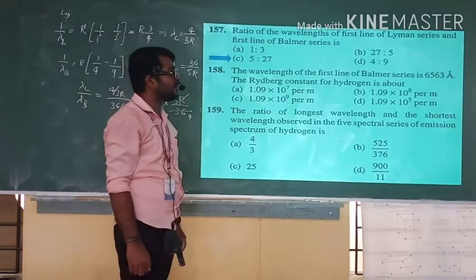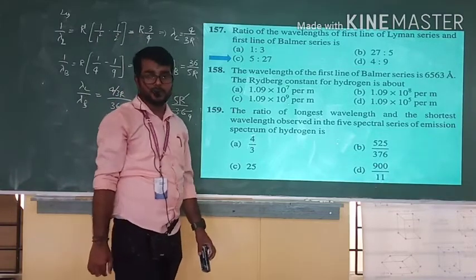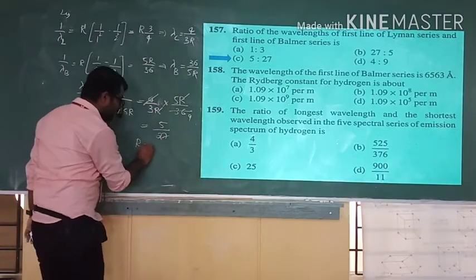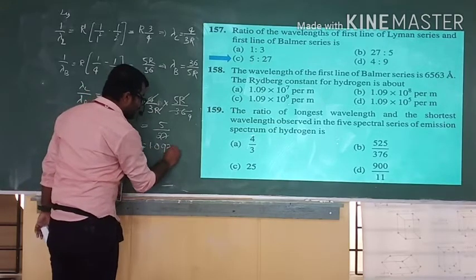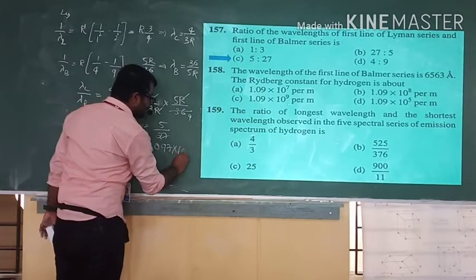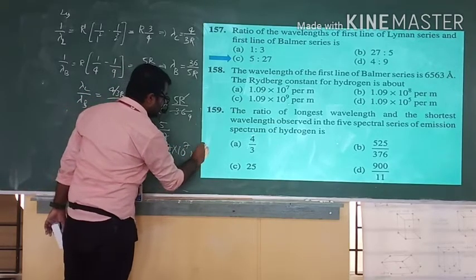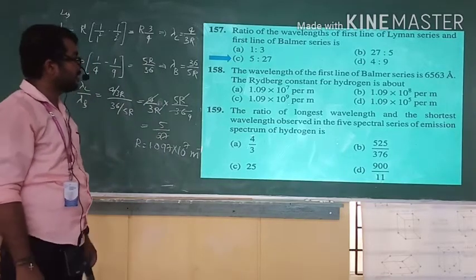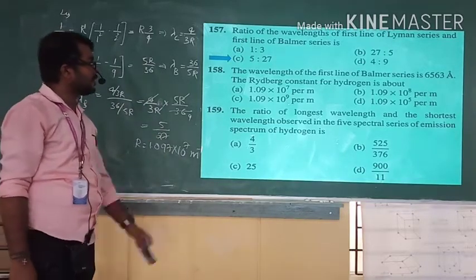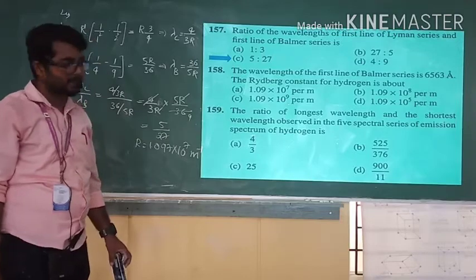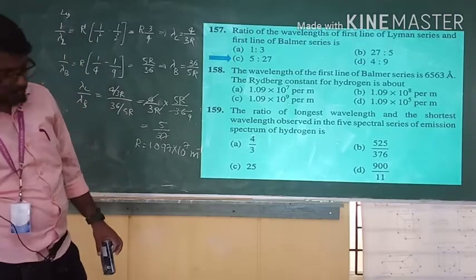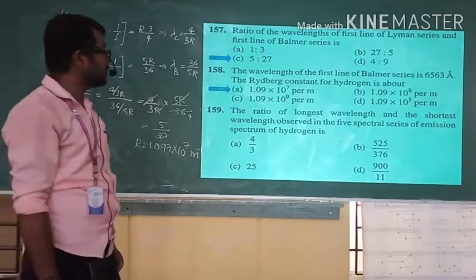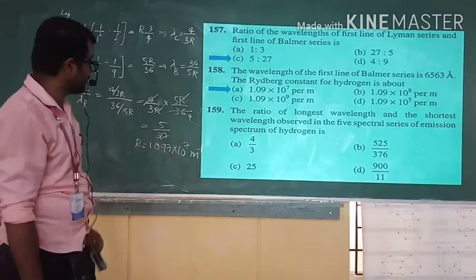The wavelength of the first line of Balmer series is 6563 Å, and the Rydberg constant for hydrogen is R = 1.097 × 10⁷ per meter.